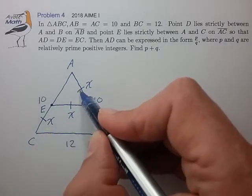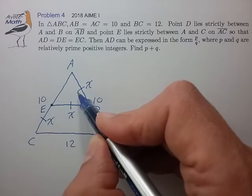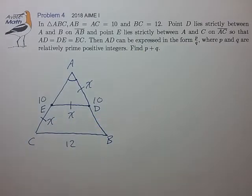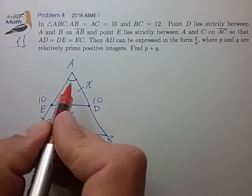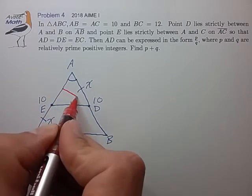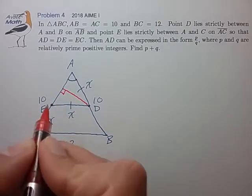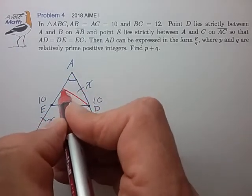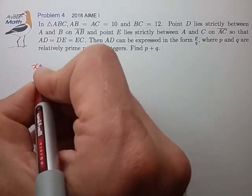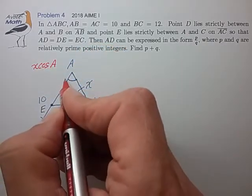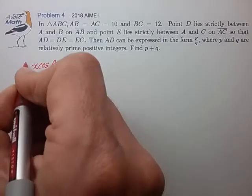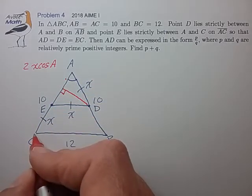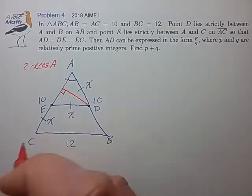We have an isosceles triangle here that seems very attractive, and it looks like it would be very useful to know the cosine of angle A. With the cosine of angle A, we could break this isosceles triangle into two right triangles and calculate the length of this smaller section to be X times cosine of A. Once we know this smaller section, we can just double it to find the length of the entire section, and then figure out an equation alongside AC. So that's the game plan.